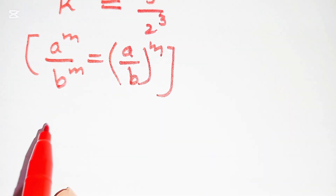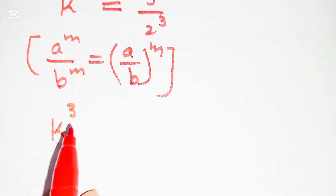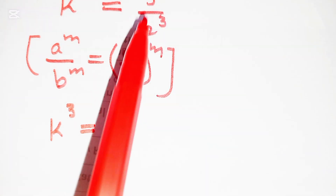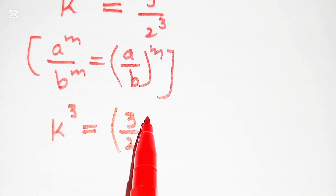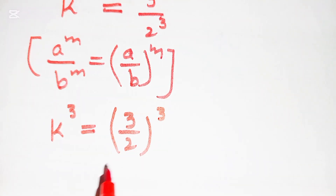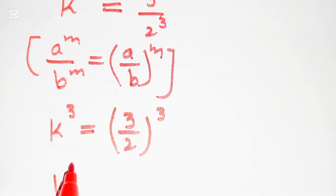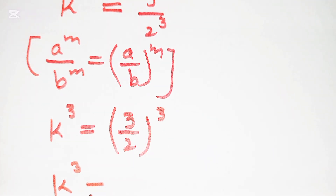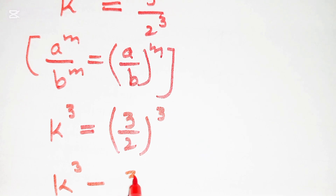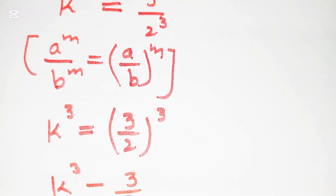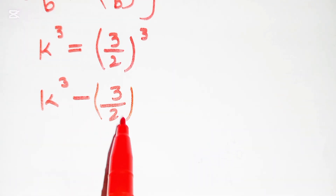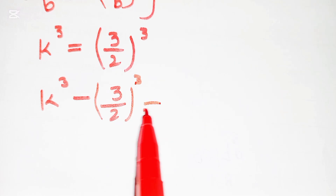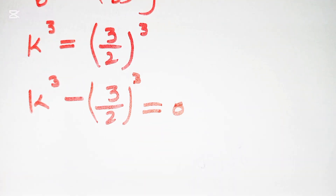So k³ = (3/2)³. We rearrange to get k³ − (3/2)³ = 0.